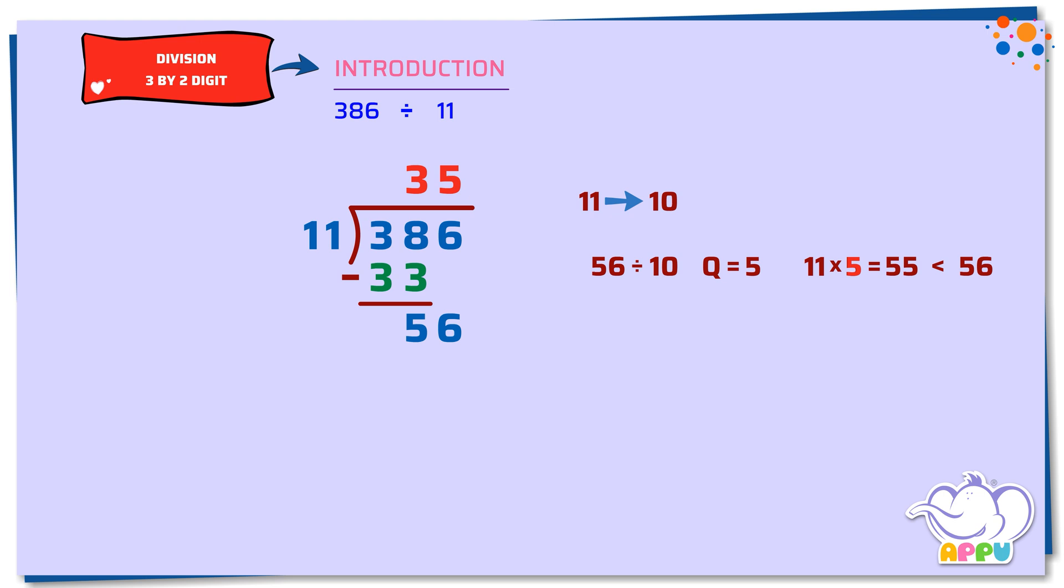We multiply 11 and 5, we get 55. We subtract 55 from 56, we get 1. We stop division because 1 is less than 11. So, 35 is the quotient, and 1 is the remainder.